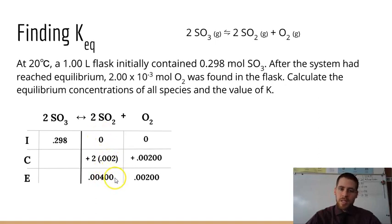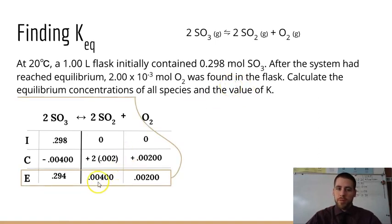Again, this isn't moles. This is concentration. We happen to be in a 1 liter flask, so it works out the same in this case. Now if this is how much we're increasing our products, then we're decreasing our reactants by that same quantity. This is a 2 to 2 ratio, so I just kind of took a shortcut and wrote it as negative 0.00400. Go ahead and subtract down, and this is how much sulfur trioxide we have at equilibrium. Now it says to calculate the equilibrium concentrations of all the species. We just did that, right? These are your equilibrium concentrations.